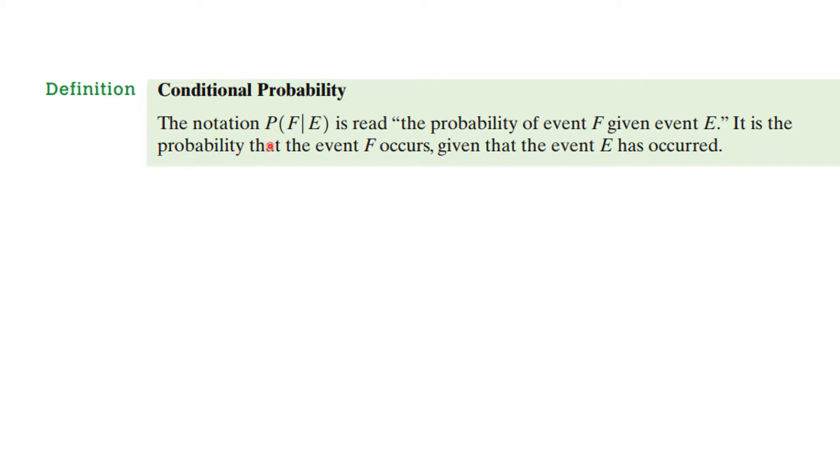The notation, the probability of F given E. And that's the way you read this, F given E. It's read the probability of the event F given event E. It is the probability that the event F occurs given that the event E has already occurred.